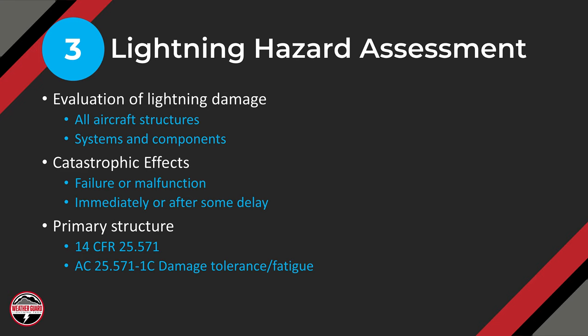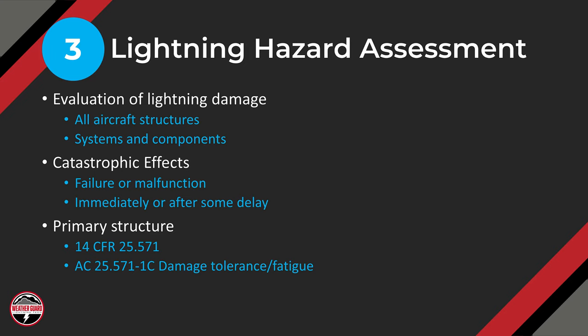Step three is the lightning hazard assessment. We need to evaluate the likely lightning damage for aircraft structures, but also systems. When I say systems, I'm talking about control tubes, control rods, things mechanical in nature located out towards extremities — flap actuators and similar items — where lightning striking near them could cause subsequent effects inside the airplane. We're looking for catastrophic effects: a failure or malfunction that can happen immediately, like severing a control cable.